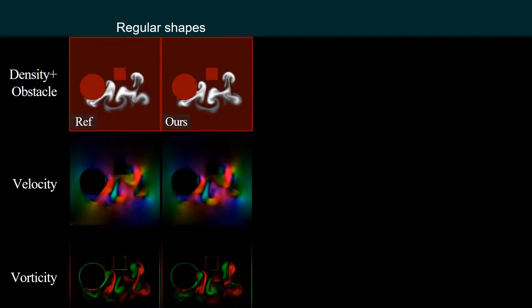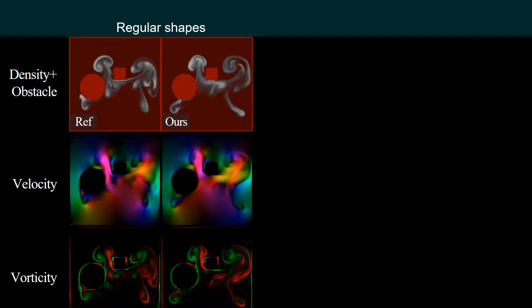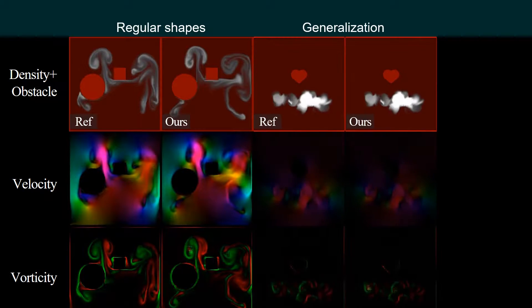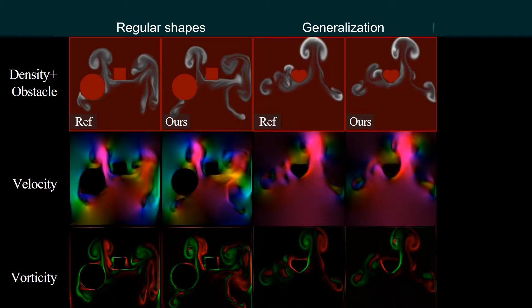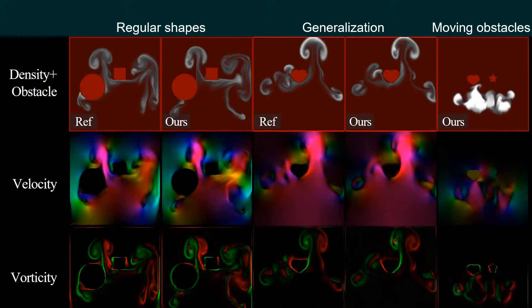Our models see obstacles in regular shapes during training. It generalizes to irregular shapes well. Moving obstacles are also handled properly.